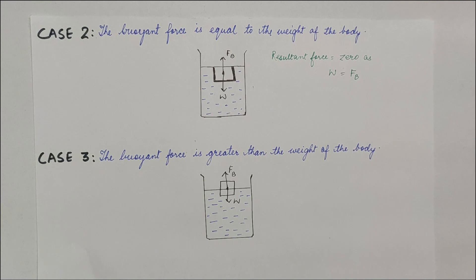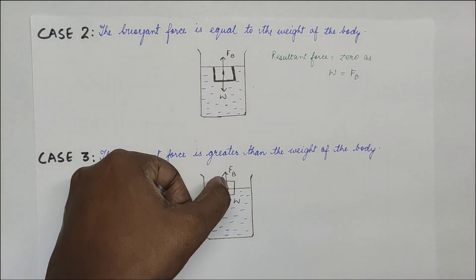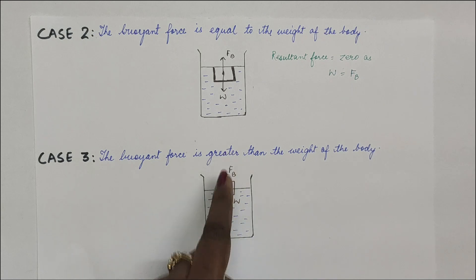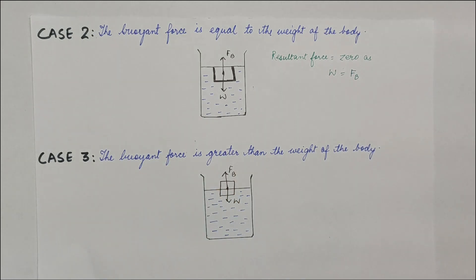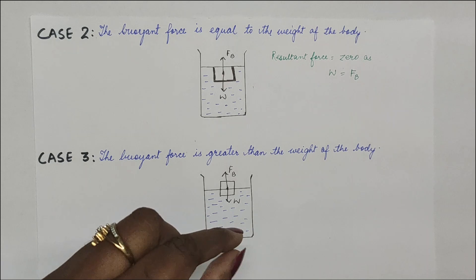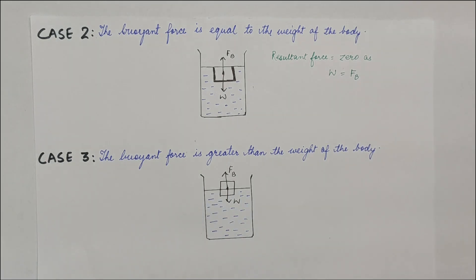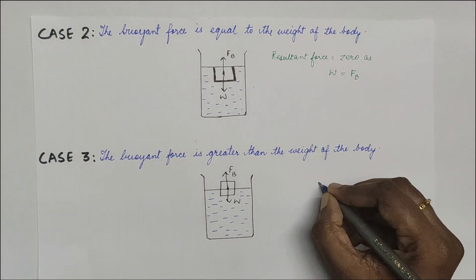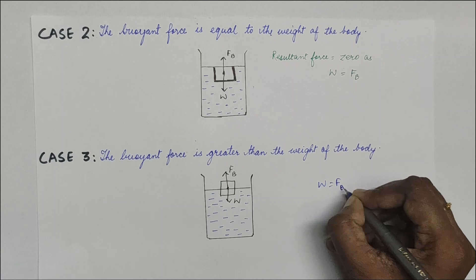Case 3: When the buoyant force is greater than the weight of the body. Here you can see half the body is inside and half is out. The resultant force acts upward, making the body float. This happens when the density of the liquid is slightly more than the density of the body. We can also say that the apparent weight of the body becomes zero here — W equals the buoyant force FB.